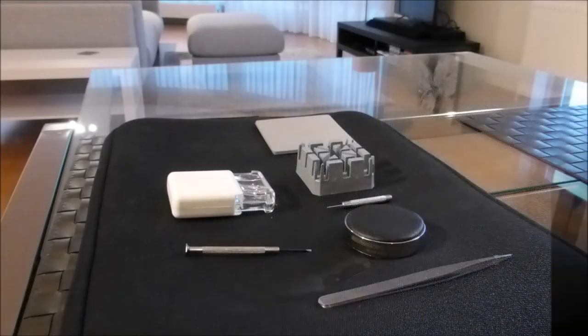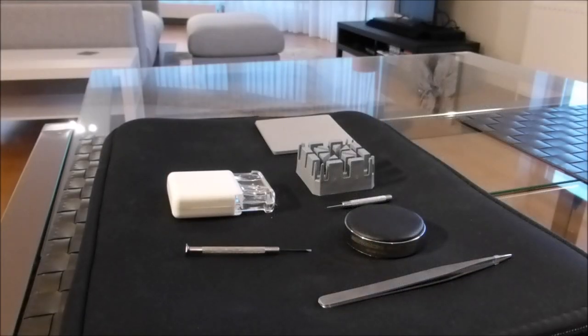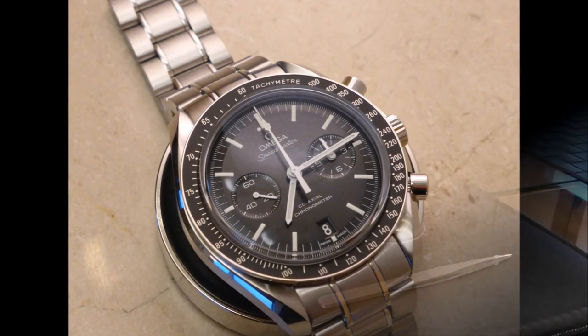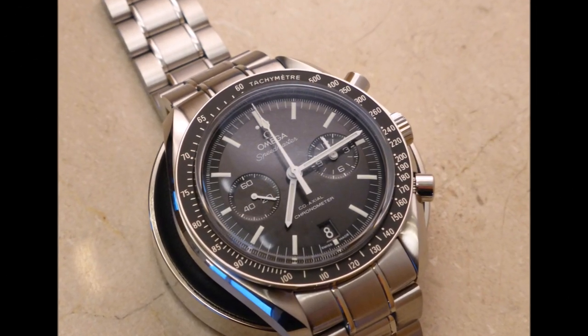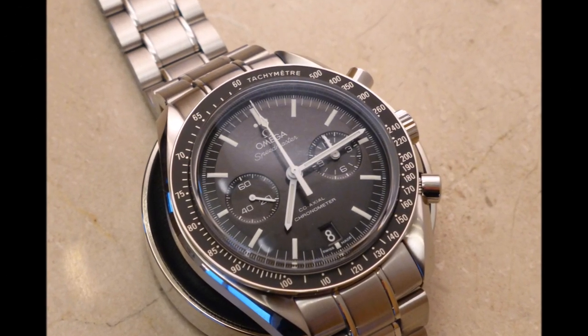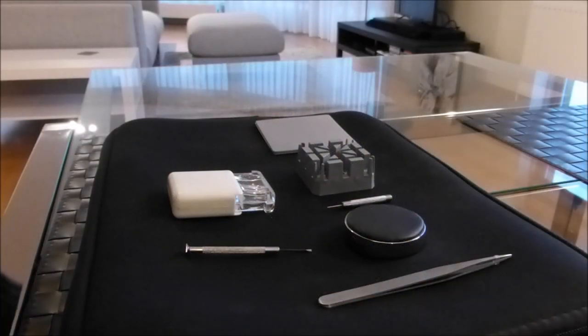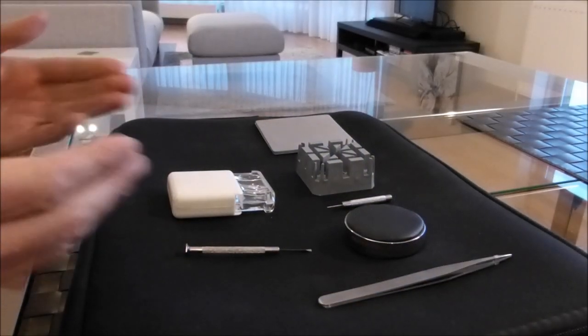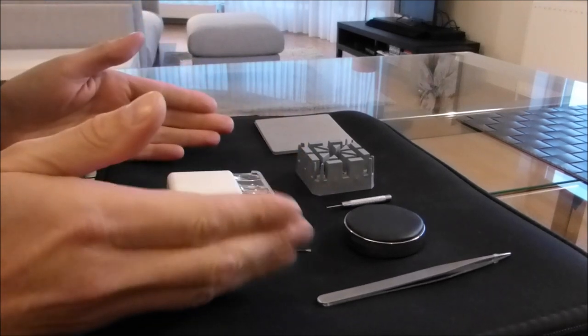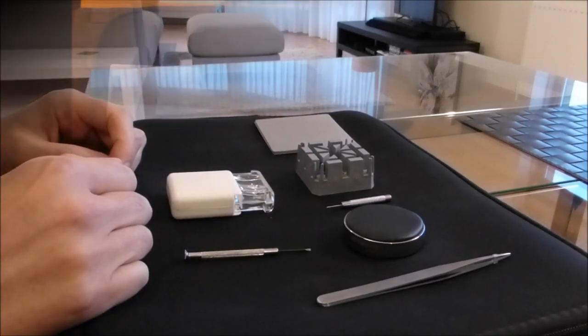This is going to be shown on an Omega Speedmaster chronograph. So basically there are some small parts, it's very simple to do I think, with some tools that you can buy quite cheaply online.